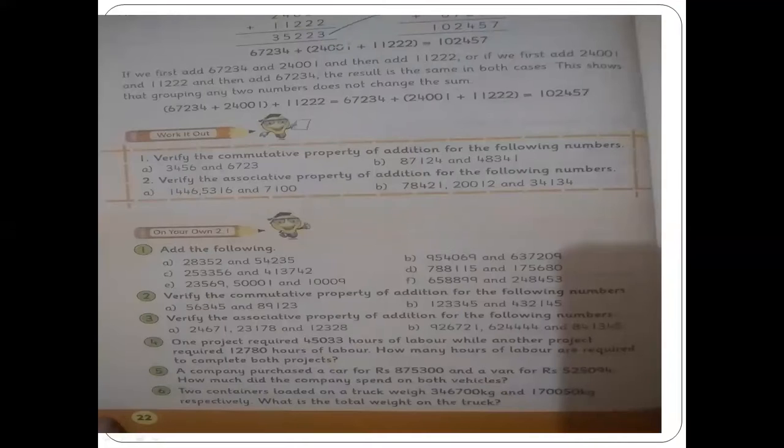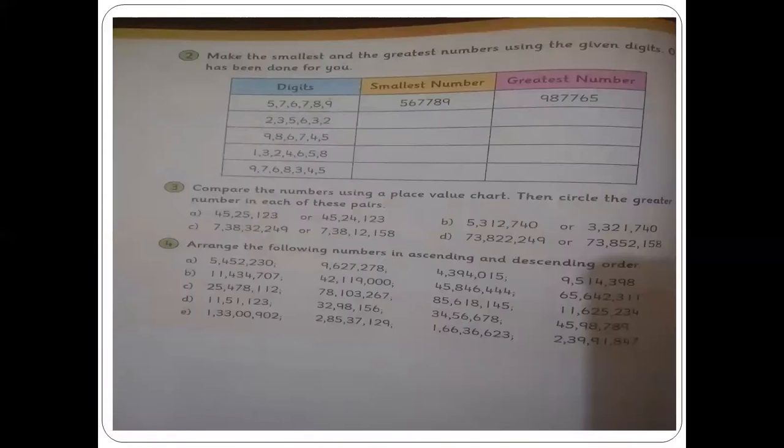After that, your next chapter is your addition and subtraction. I have done word problems. So these are word problems from page number 22. Word problems number 4, 5, and 6. You have to copy it in your copy. This is a small work I have told you about the book.